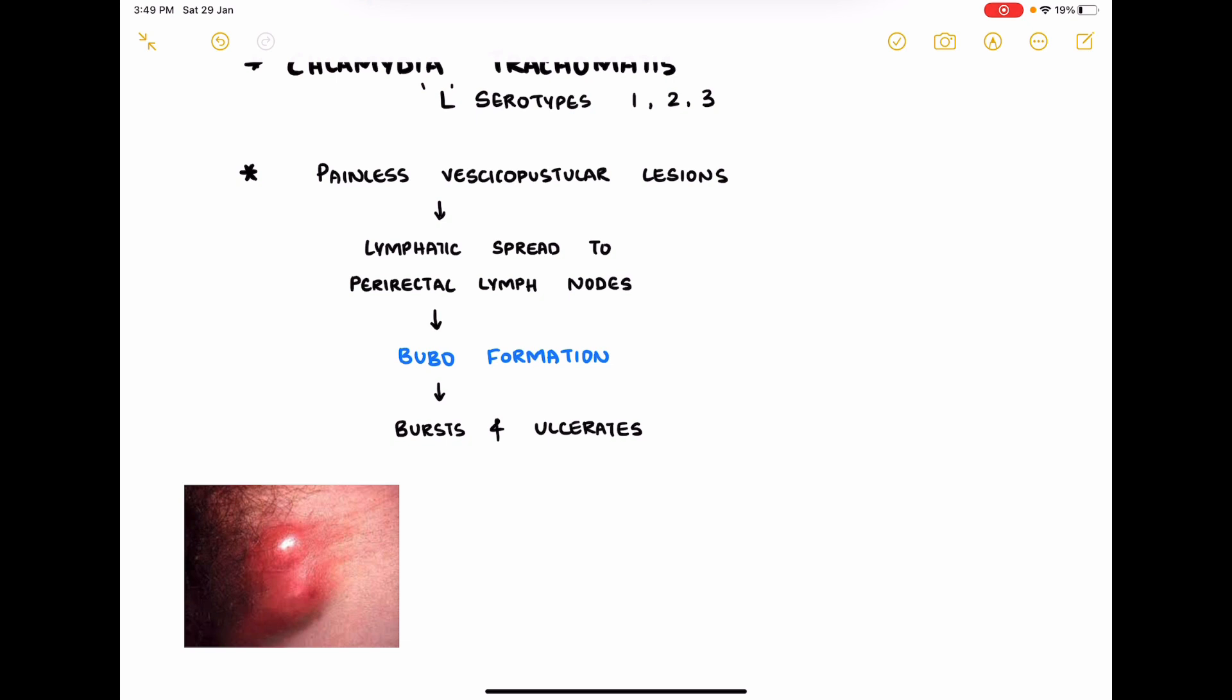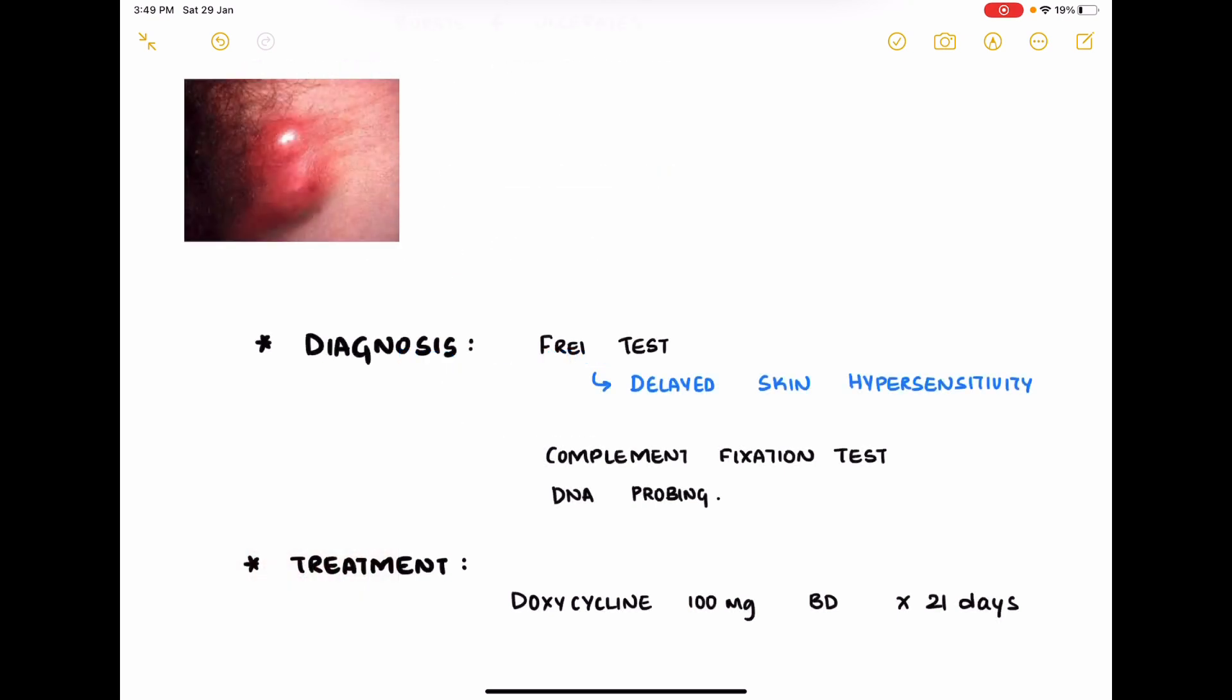Diagnosis is done by Frei test, which is a delayed skin hypersensitivity test. Other tests you can use are complement fixation test and DNA probing. For treatment, doxycycline 100 mg twice daily for 21 days is effective.